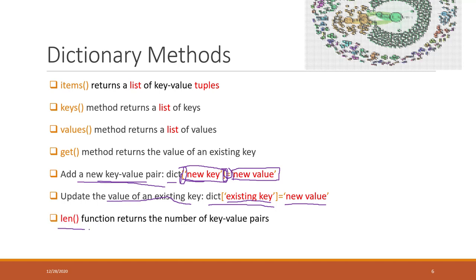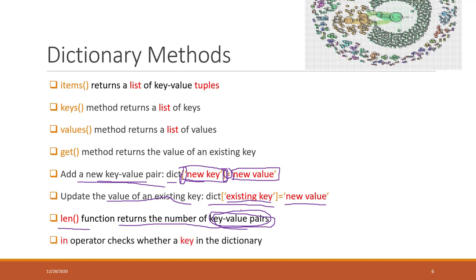We can also use the len() function, which returns the number of key-value pairs in the dictionary. The in operator checks whether a key exists in the dictionary — it does not check whether a value exists, only keys.